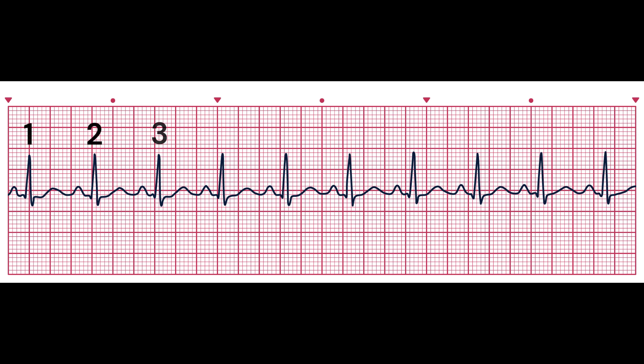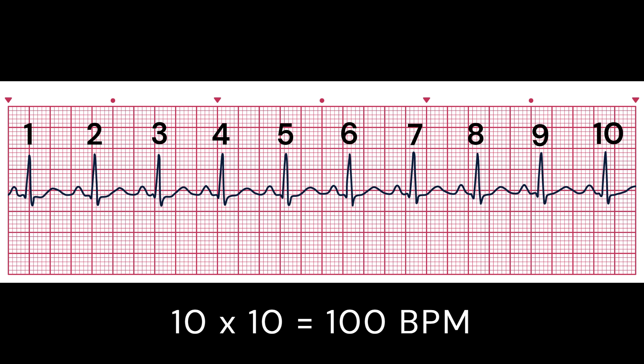The next step is to count the number of QRS complexes — the main deflection on the EKG trace — within that interval. Once you have counted the QRS complexes, you multiply that number by 10 to obtain the heart rate in BPM. In this example, there are 10 QRS complexes in the six-second strip: 10 times 10 equals 100, therefore this strip is 100 beats per minute.